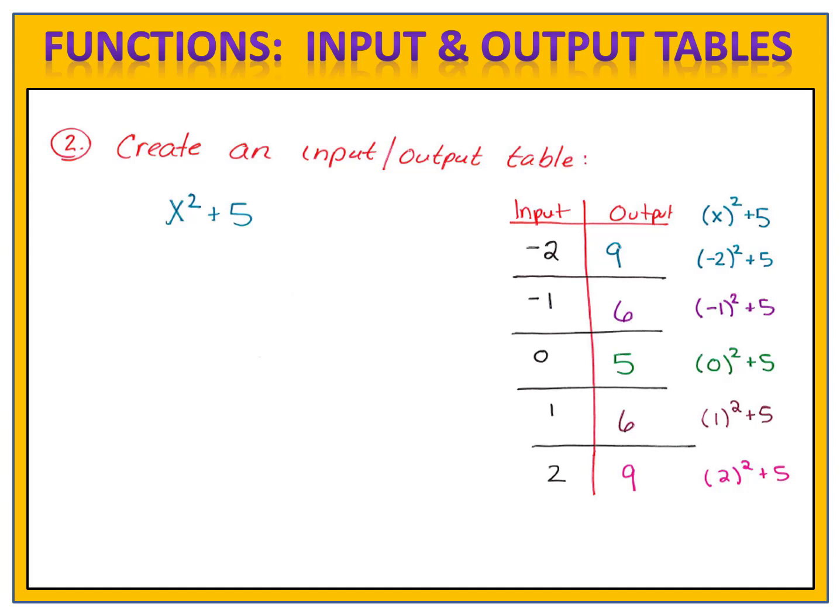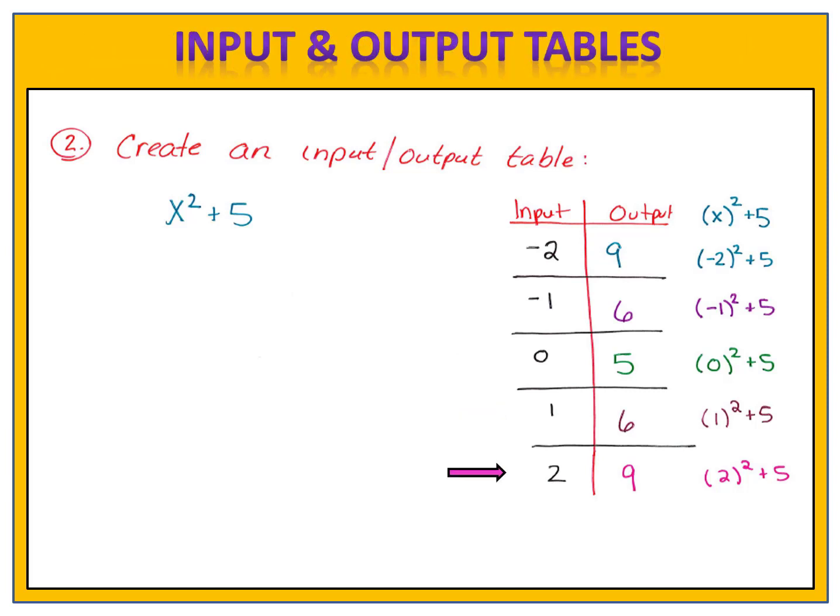That tells us, for the expression x squared plus 5, when we input a negative 2, the output is 9. When we input negative 1, the output is 6. When we input 0, the output is 5. When we input 1, the output is 6. And when we input 2, the output is 9. The table keeps our inputs and outputs organized, and it actually becomes very useful, as you'll see in the coming days.